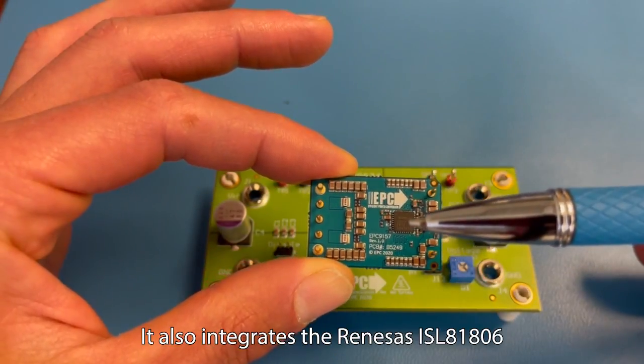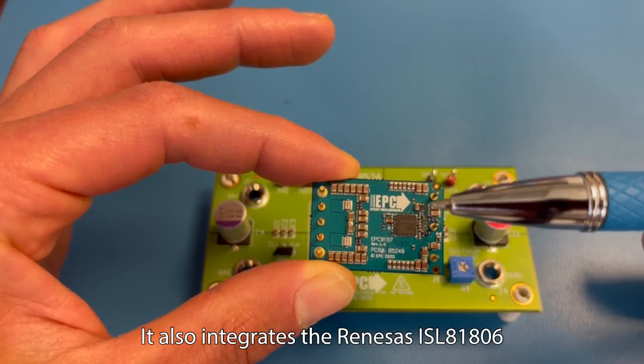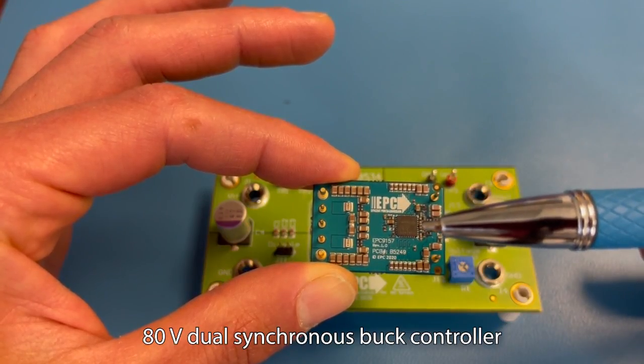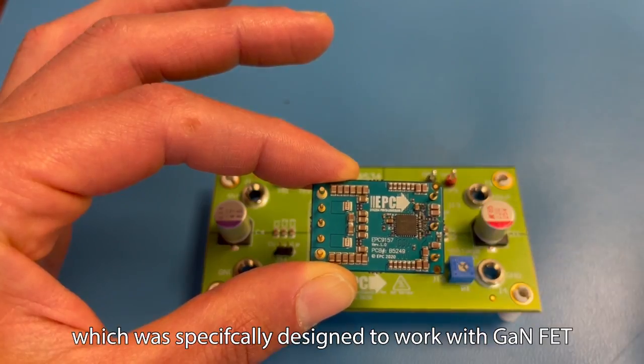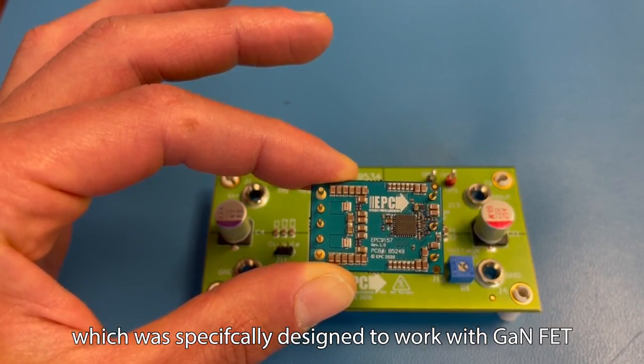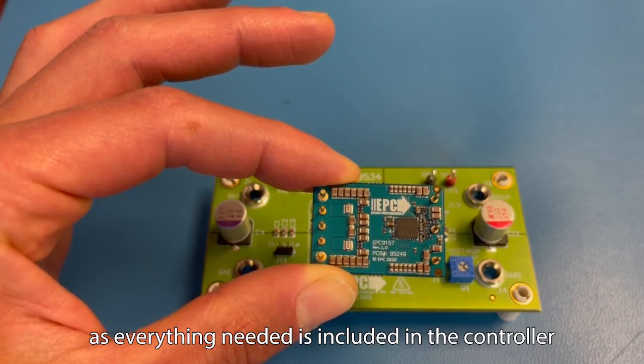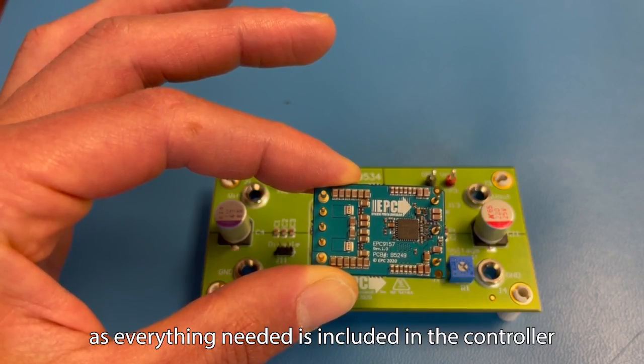It also integrates the Renesas ISL81806 80 volt dual synchronous buck controller, which was specifically designed to work with GaN FETs. As you can see, there are no additional circuits as everything needed is included in the controller.